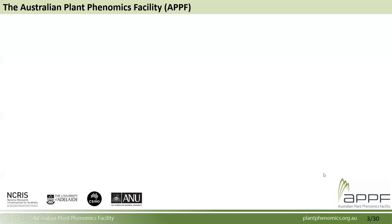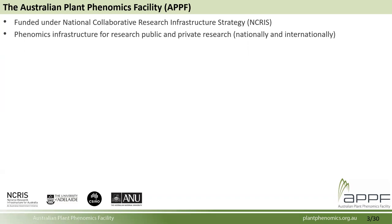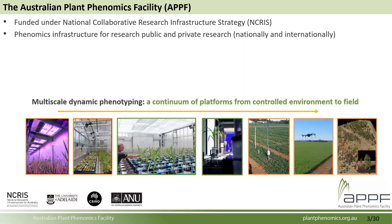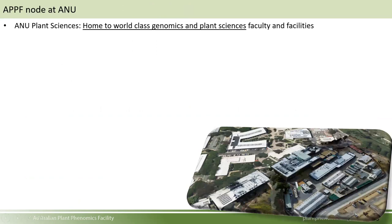The Australian Plant Phenomics Facility was funded in 2010 under the National Collaborative Research Infrastructure Strategy. The goal was to build phenomics infrastructure to support public and private research on both national and international clients across all scales — from highly controlled environments in the lab out to drones, LiDAR, and field components. There are three nodes of the APPF: Plant Accelerate in Adelaide, the High Resolution Plant Phenomics Center in Canberra, and our ANU node.